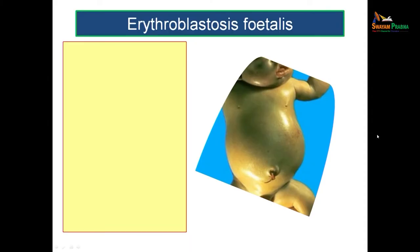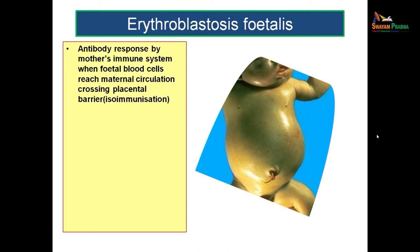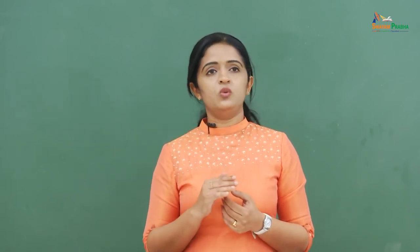Before moving on to the topic proper, let us see a clinical condition. This fetus is suffering from a condition known as erythroblastosis fetalis. In this condition, there is an antibody response by the mother's immune system when the fetal blood vessels reach the maternal circulation, crossing the placental barrier. Usually, the fetal blood vessels won't reach the maternal blood, but at times it might get mixed up with maternal blood crossing the placental barrier due to some defects. As a result, the mother's blood will start producing antibodies, resulting in destruction of the fetal red blood cells.